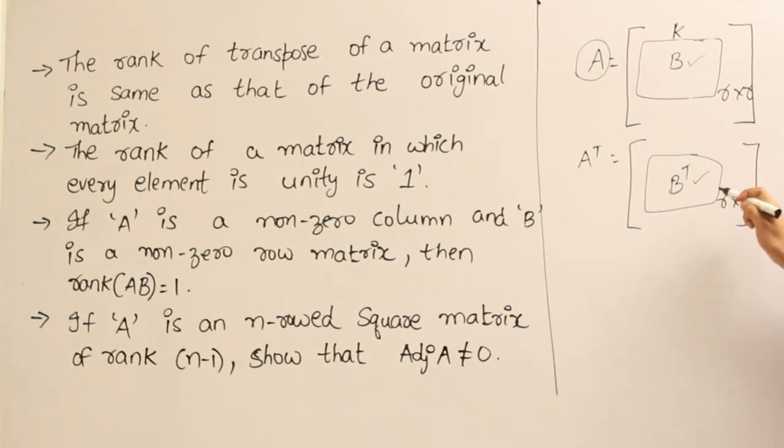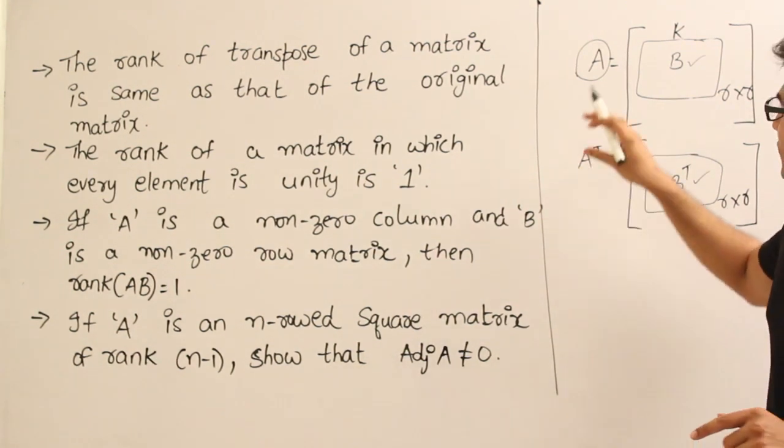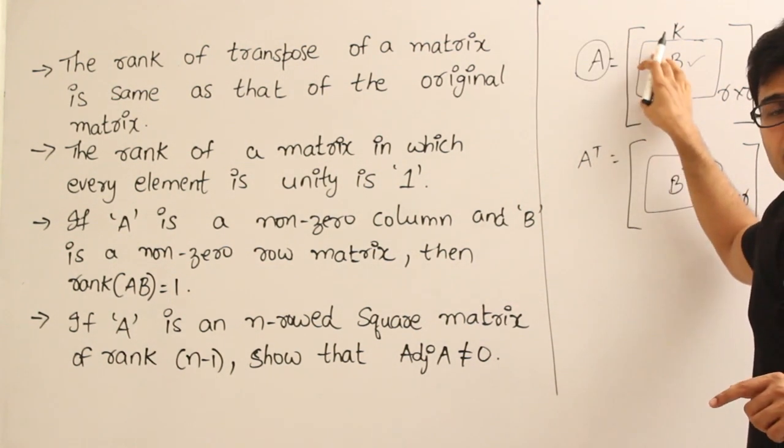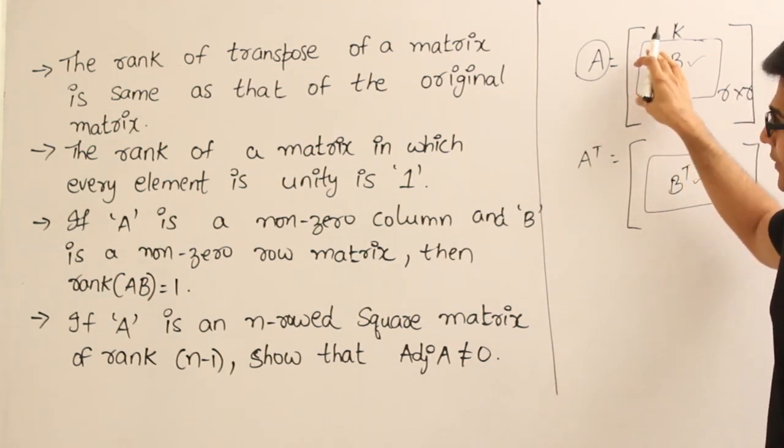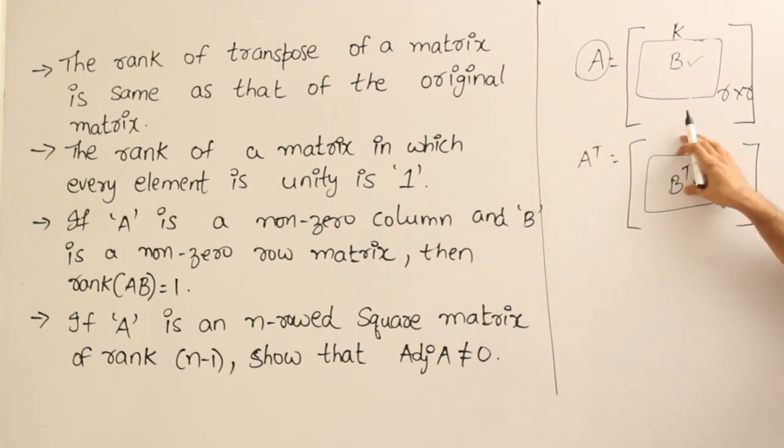it will be an R by R sub-matrix which will be same. So, I think you are getting the point. What I am trying to say is if inside A, there is a sub-matrix of size R by R whose determinant is not equal to 0 then inside A transpose also, we get the same sub-matrix just it will be transposed